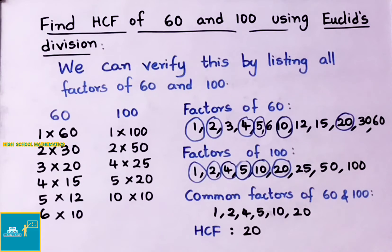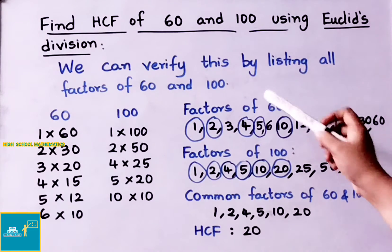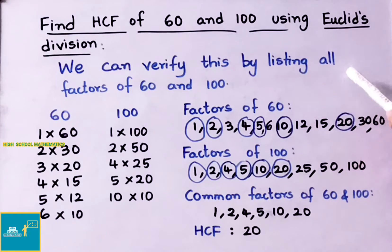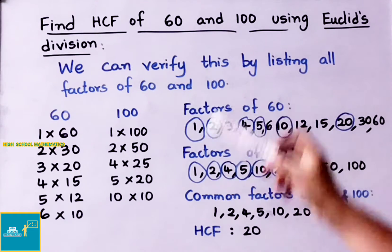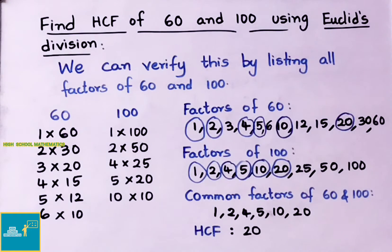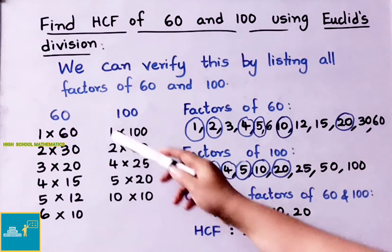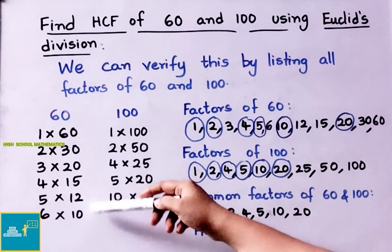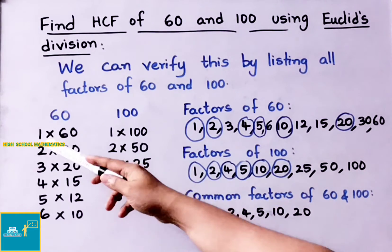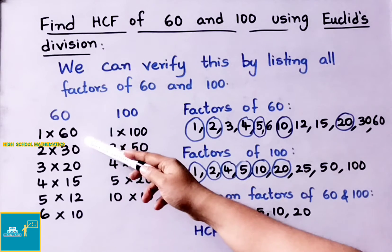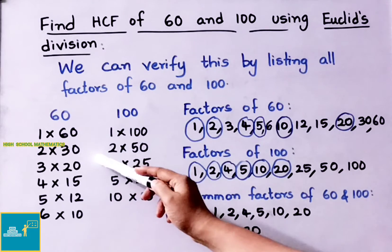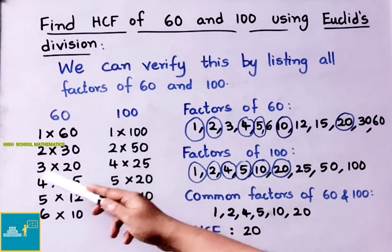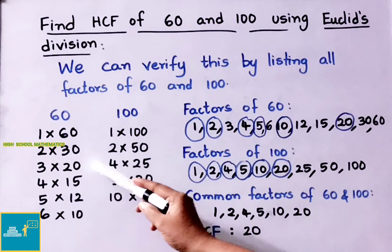We can verify the HCF by listing all factors of 60 and 100. Factors of 60: 1×60, 2×30, 3×20, 4×15...